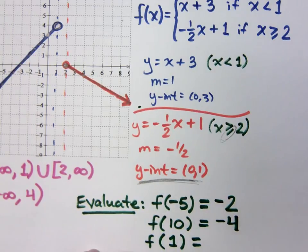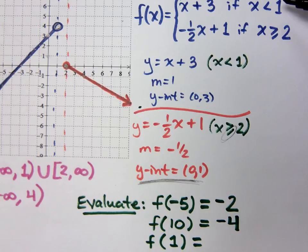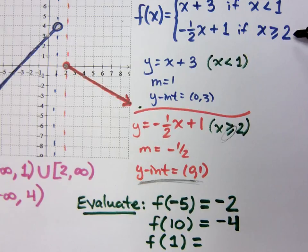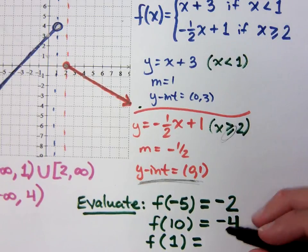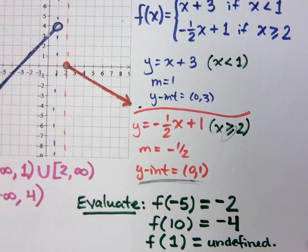What is f of 1? Is 1 less than 1? No, so it doesn't go into the first piece. Is 1 greater than or equal to 2? No, so it doesn't go into the second piece either. What this tells us is that the function is undefined for that value of x.